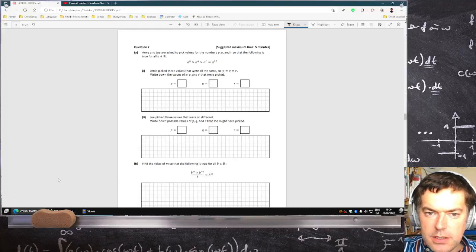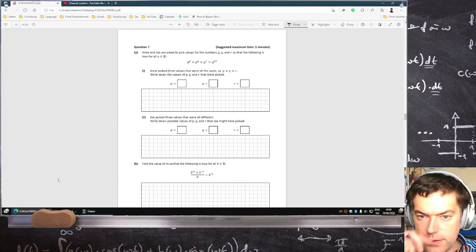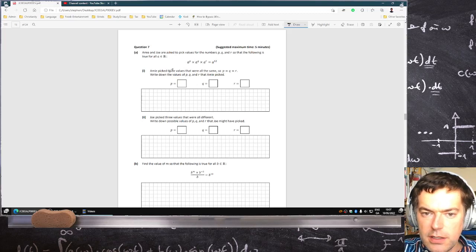What's next now? Amy and Joe are asked to pick values for numbers P, Q and R so that the following is true for all A.